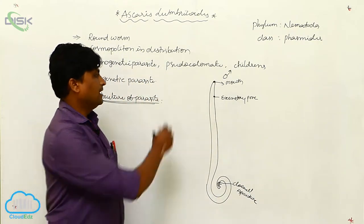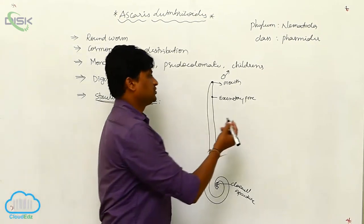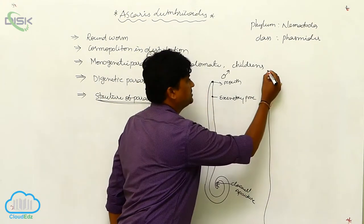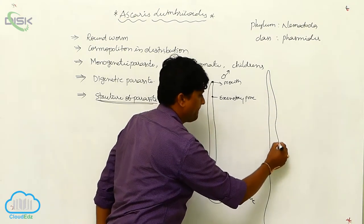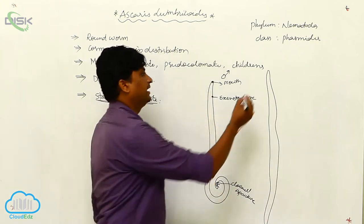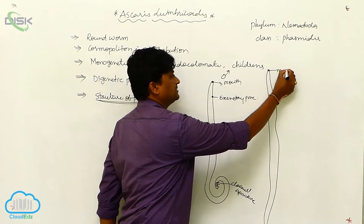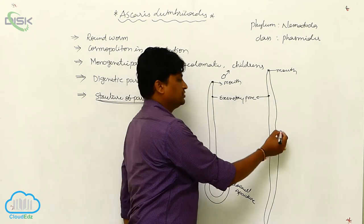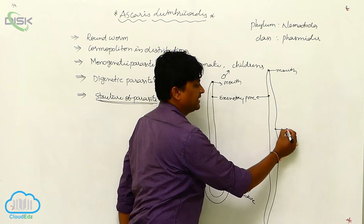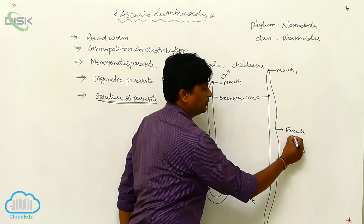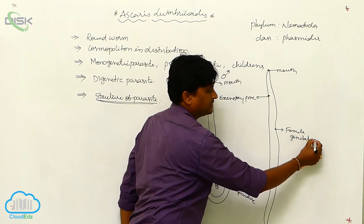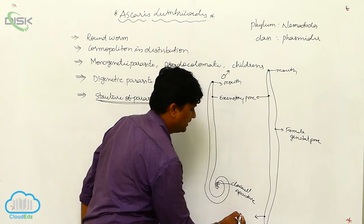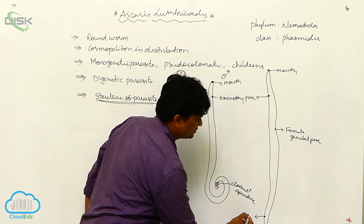The female Ascaris is similar but longer than the male, with the same cylindrical body. It has a mouth at the anterior end, with the excretory pore just below it. At about three-fourths of the body length, there is a female genital pore. Near the tip of the tail, there is also an anus.